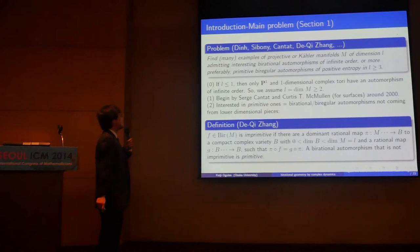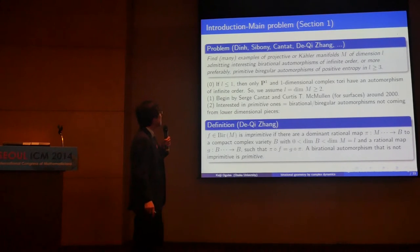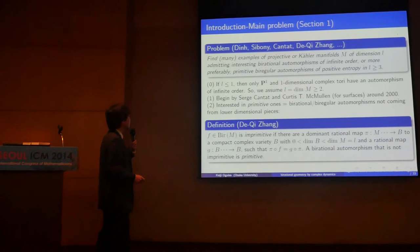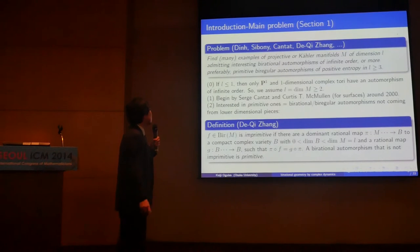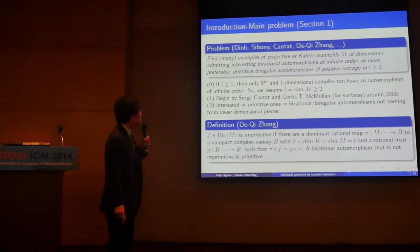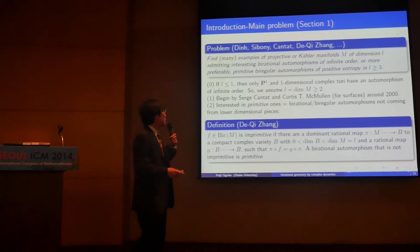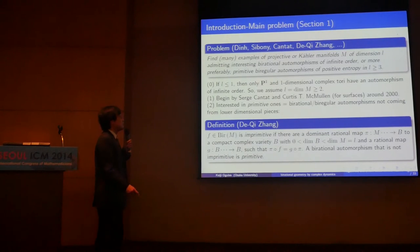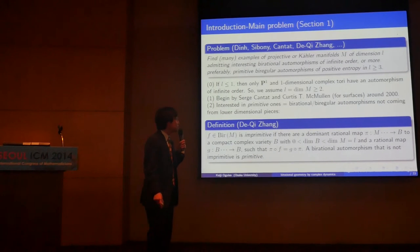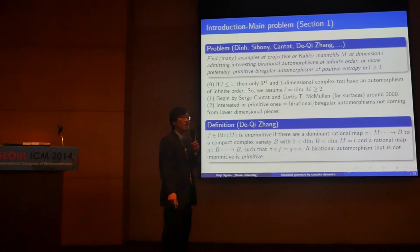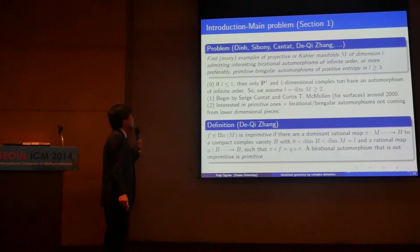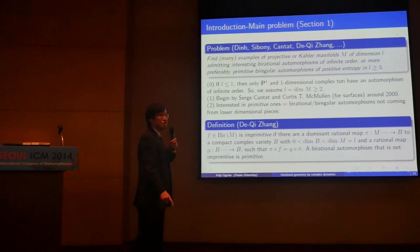In this program, if dimension is less than 1, then the only manifolds which have infinite order automorphisms are P1 and the one-dimensional complex torus, and all automorphisms are well understood. So we assume dimension is greater than or equal to 2. This kind of automorphism has quite a natural history, but from the viewpoint of complex dynamics, started by Cantor and McMullen around each century, some part is relatively new.